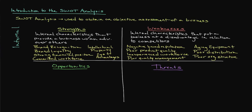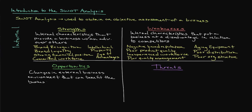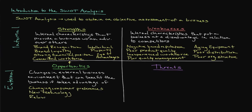The next element of the SWOT analysis are opportunities, which represent possible changes in the business's external environment that can benefit the company if taken advantage of. These are what we refer to as external factors, meaning the business does not have the ability to control them — the best it can do is anticipate and adapt to them. Opportunities, if leveraged properly, can turn into strengths in the future. Common opportunities include changes in consumer preferences, new developments in technology, relaxing government regulations, the removal of trade barriers, and even the altering demographics of a society.